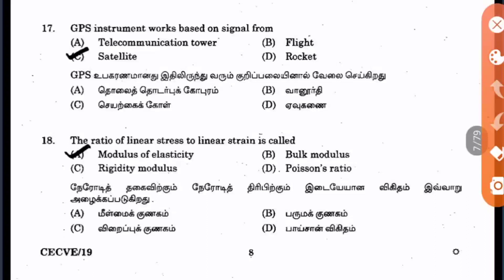Question 17: A GPS instrument works based on signals from satellites. A minimum of 4 satellites are required for GPS to work. Question 18: The ratio of linear stress to linear strain is called modulus of elasticity. Shear stress to shear strain is rigidity modulus, and bulk modulus is based on volumetric stress and strain.